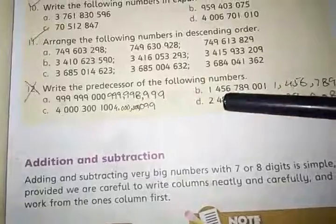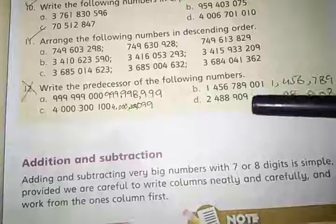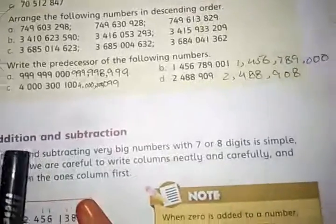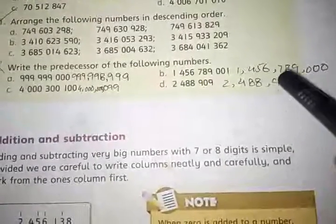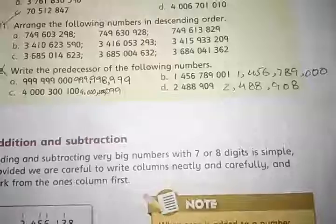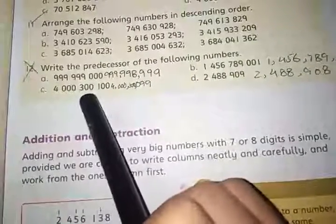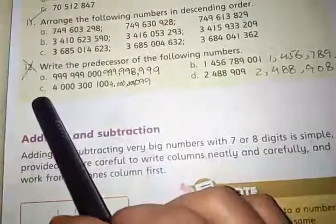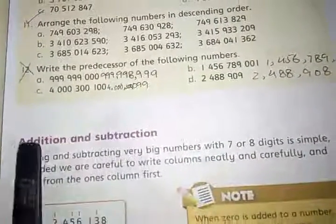Number B is 1,456,789,001. Now we have to write its predecessor. The one number before this number is 1,456,789,000. Number C is 4,300,100,100 and its predecessor is 4,300,099,000.